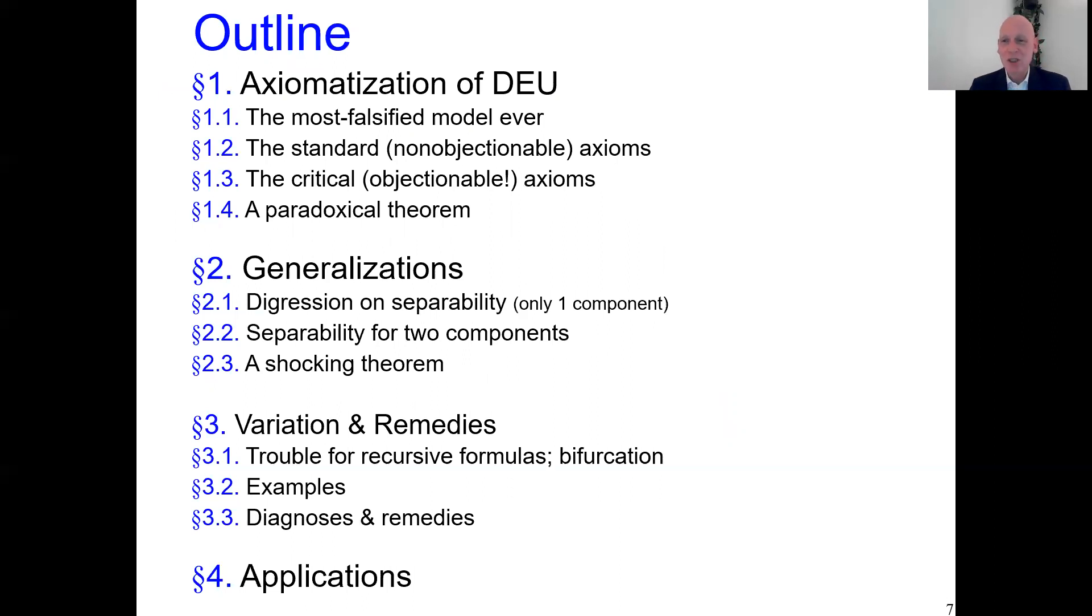I'm going to give a preference axiomatization of it. I'm going to start with the standard routine axioms, continuity, things like that, that nobody criticized. But of course, this is a very critical model with very restrictive content, much falsified, a lot of separability going on. So there will also be critical axioms that show the critical content of the model. They come in section 1.3. But first we do the standard conditions.